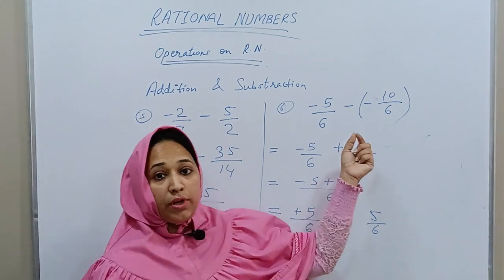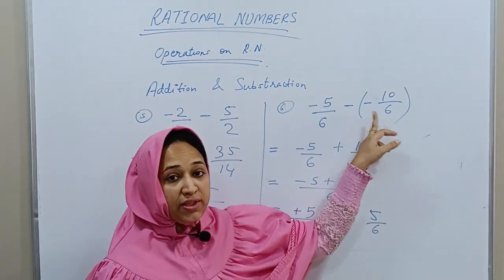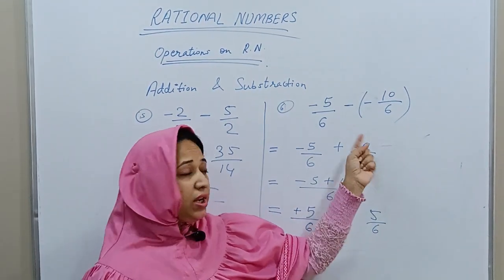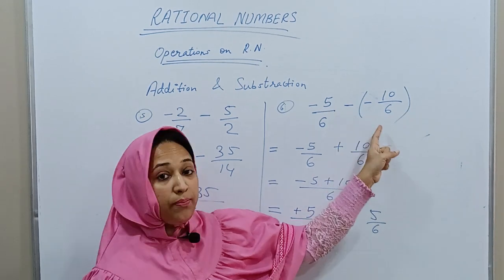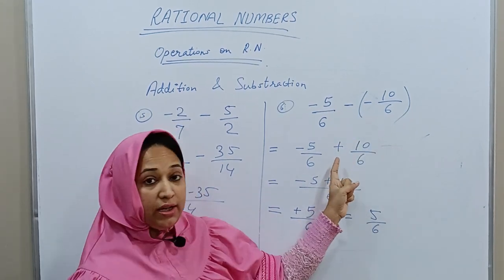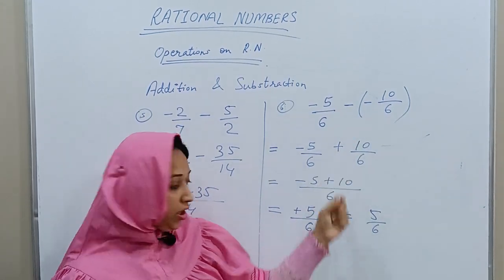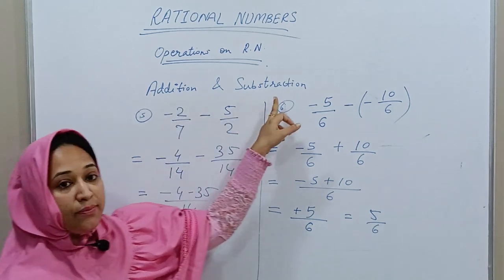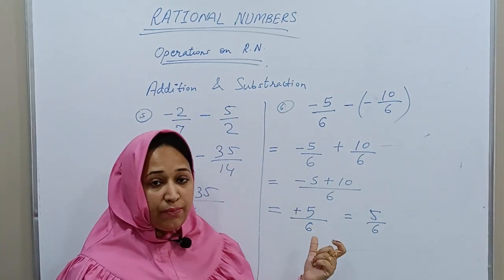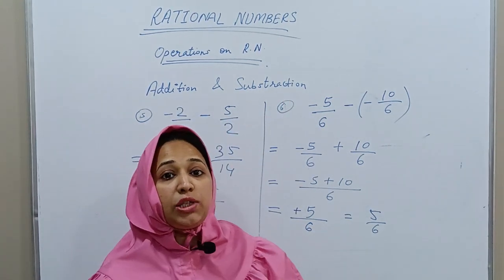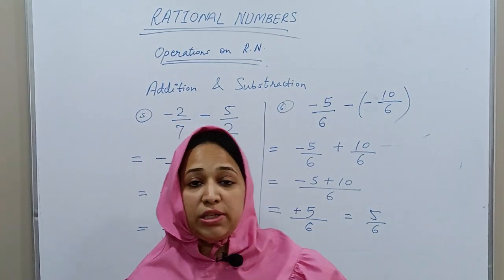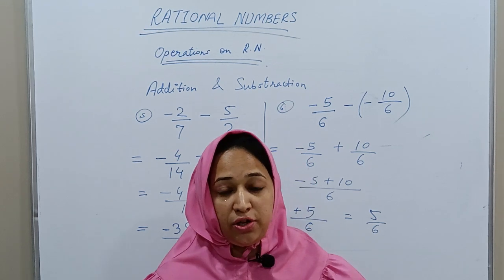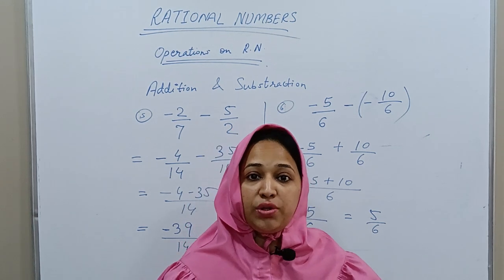Remember, when you have two negative signs together or two different signs together, multiply them to get the correct sign. This is how addition and subtraction are done on rational numbers. In the next video I will explain how multiplication and division can be done on rational numbers. Thank you very much.